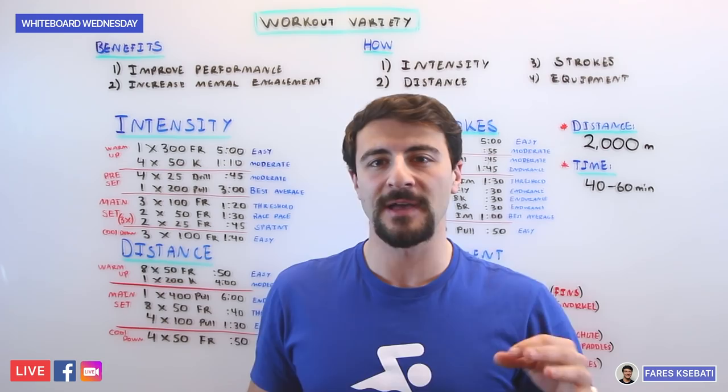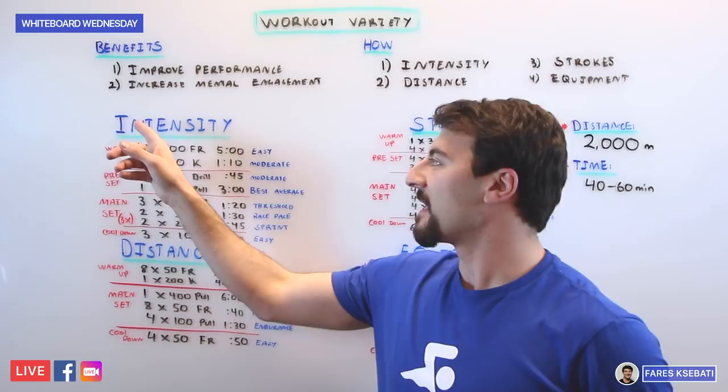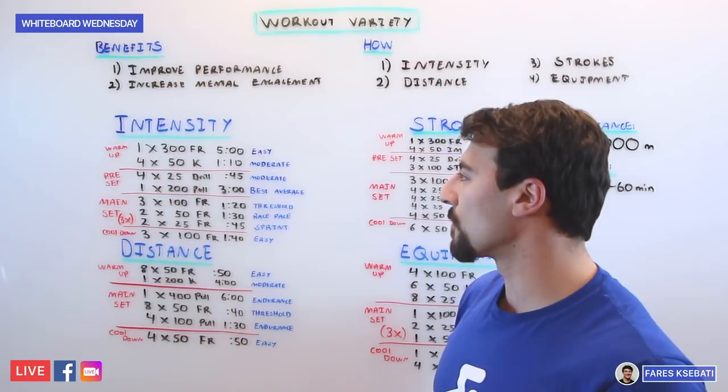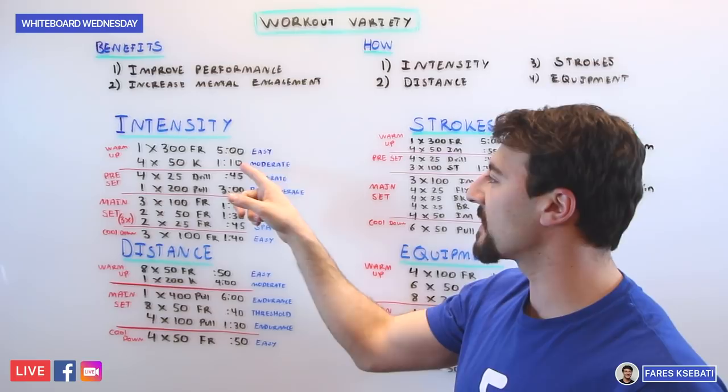So let's take a look at each workout one by one. If we're looking at intensity, how can you vary the intensity of a workout keeping it at 2,000 meters? So in this workout we have a warm-up, preset, main set that goes three rounds, and a cool down. The warm-up is 300 freestyle in the easy energy zone, followed by 4x50s kick on 1:10 moderate.